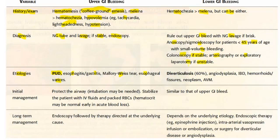In the case of lower GI bleed — very high yield for the exam — diverticulosis accounts for 60% of lower GI bleeding. Angiodysplasia can also be present, along with inflammatory bowel disease, hemorrhoids, fissures, neoplasm, and arteriovenous malformation.